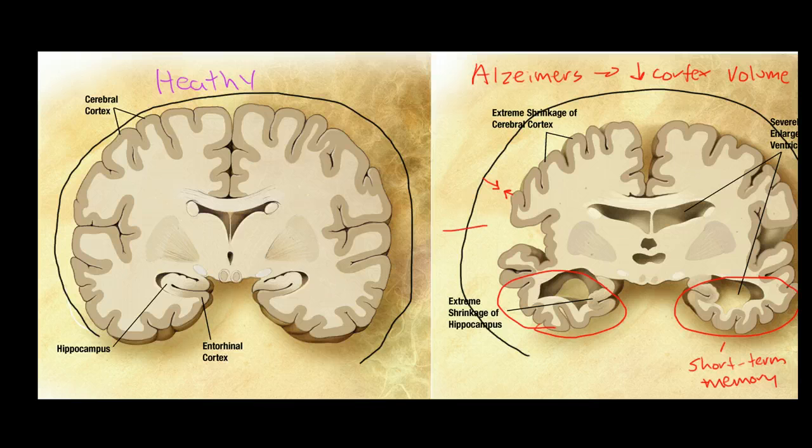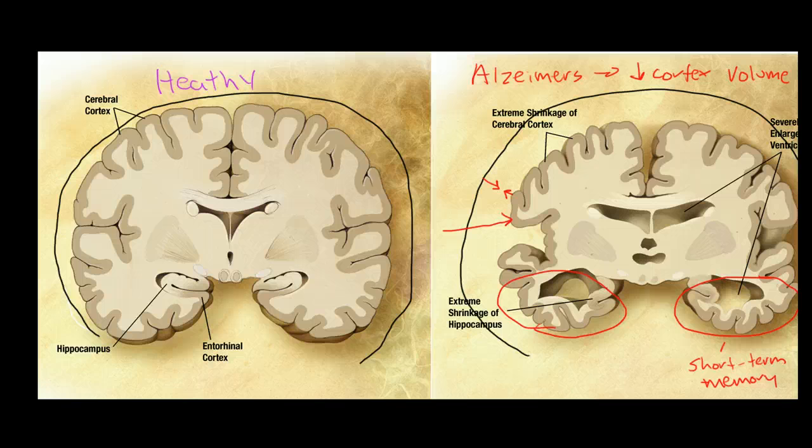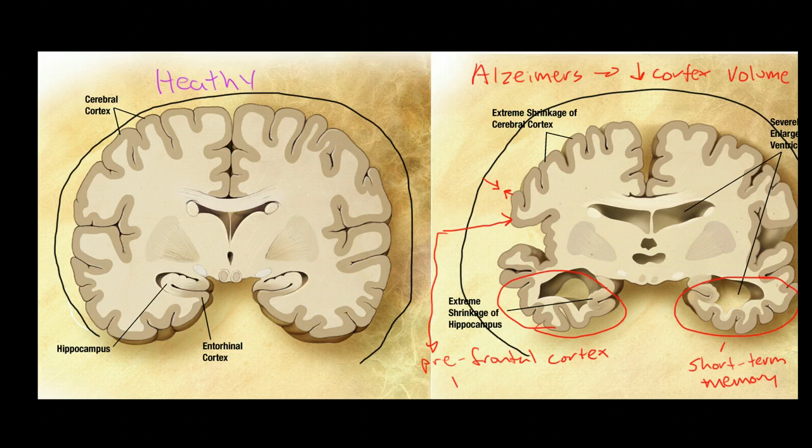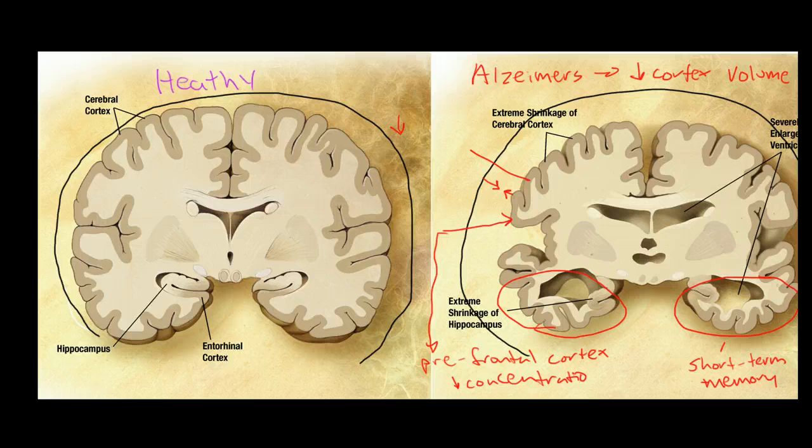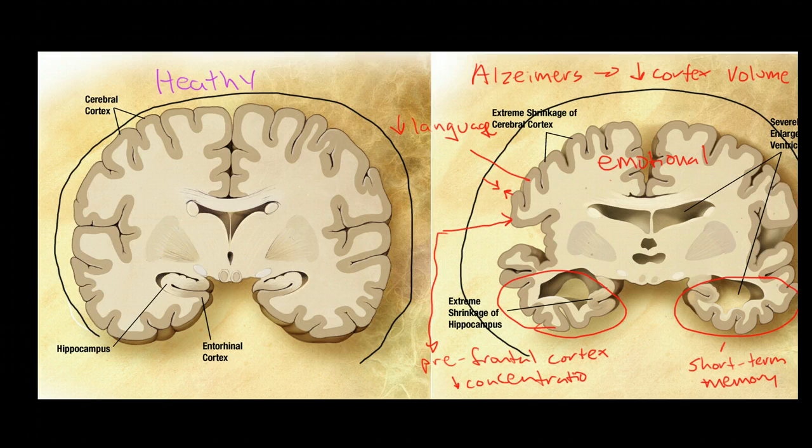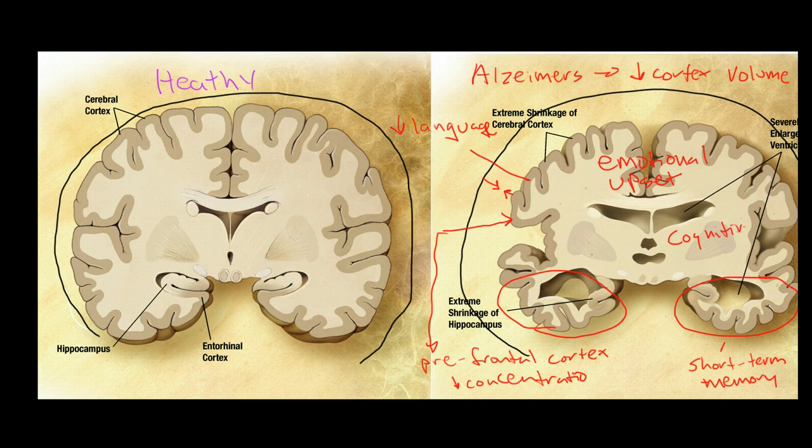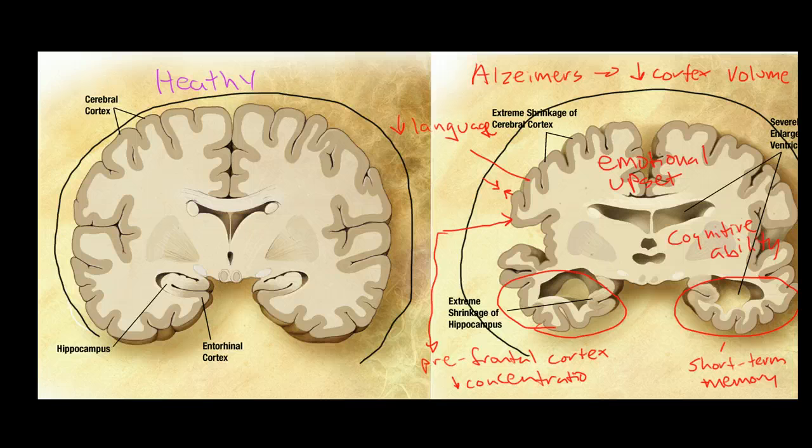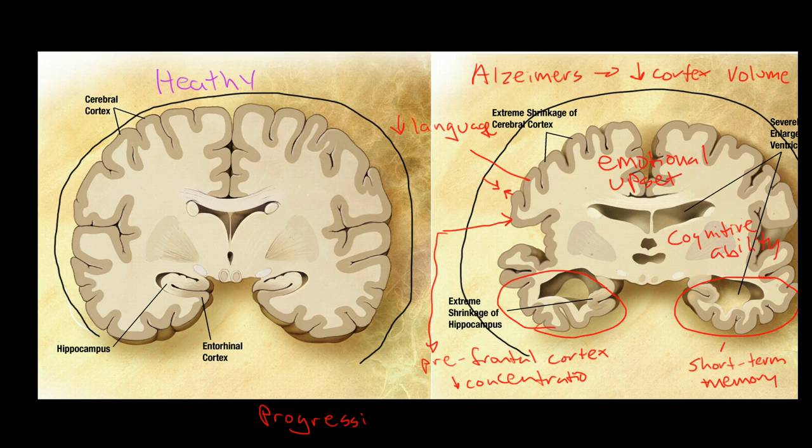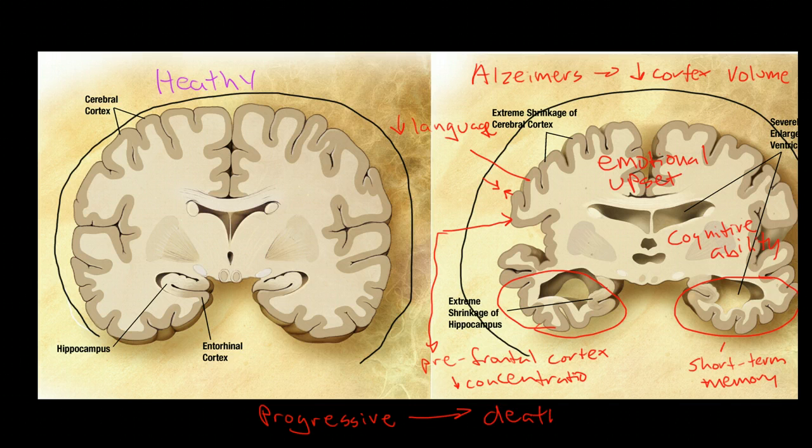So this is one of the places that's affected quickest and most severely in Alzheimer's disease. But we also have other deficits like the prefrontal cortex is affected and this causes decreased concentration. We also have the language centers are affected so we have decreased language. We have emotional upset because the frontal lobes are affected and loss of total cognitive ability. And the disease is progressive. The damage to the neurons and the loss of cortical size continues. It progresses inexorably until death and usually the disease will progress over a period of 10 to 12 years.